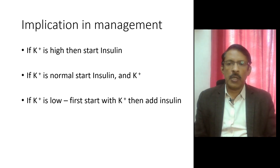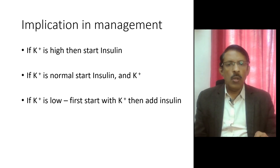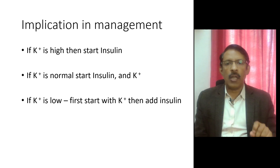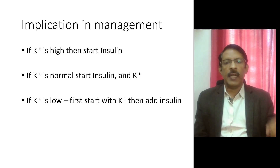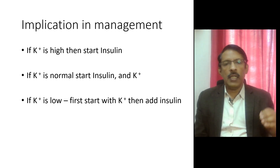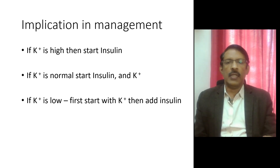Now the implications in management: if the potassium is high, just start off with insulin. Insulin pushes glucose inside along with potassium, so both are taken care of — very rare to happen. Usually what happens is the potassium levels are low or normal. A normal potassium level would indicate that there is some amount of intracellular potassium depletion, so you start insulin with a potassium drip simultaneously so that as glucose gets pushed inside, potassium also gets pushed inside maintaining intracellular levels. If the potassium level is low, starting insulin will further aggravate the hypokalemia, so first treat the hypokalemia with potassium and then start insulin treatment.